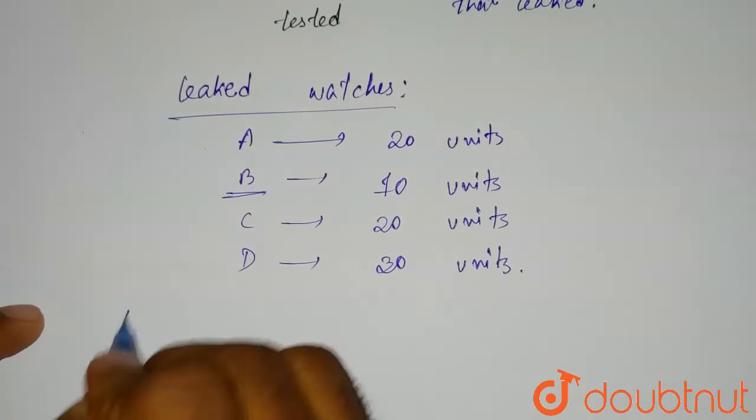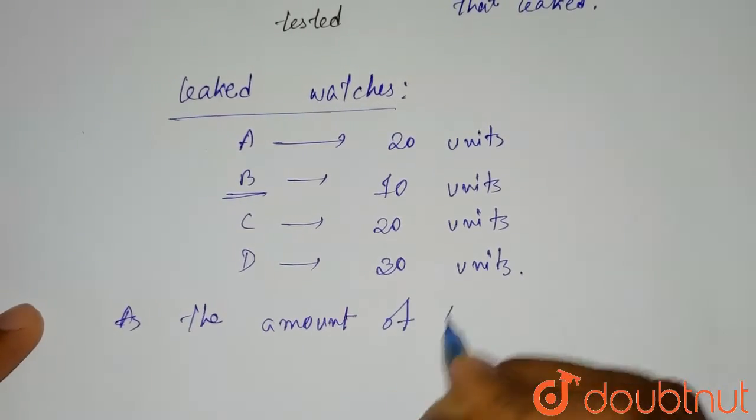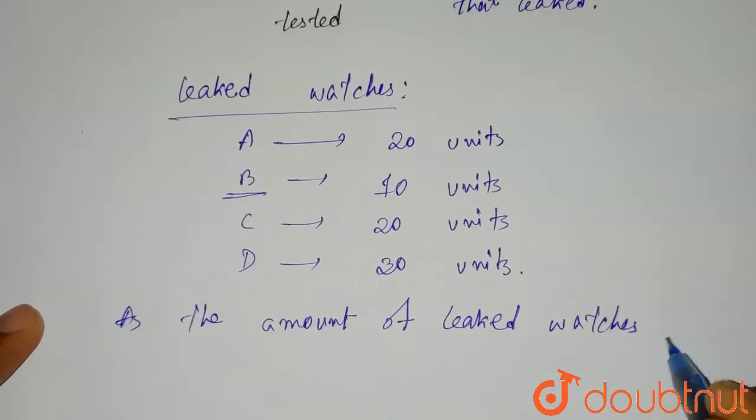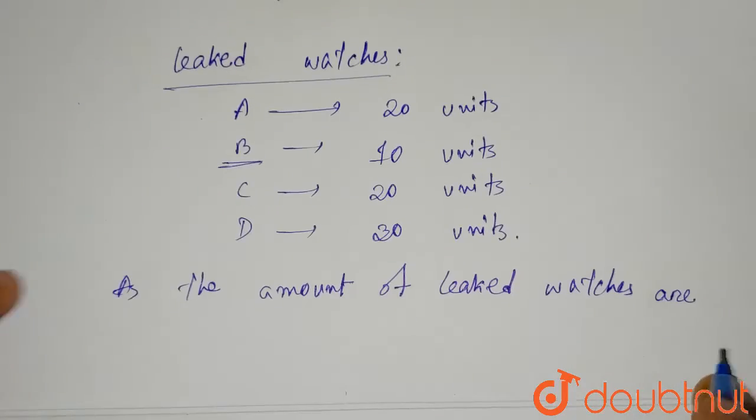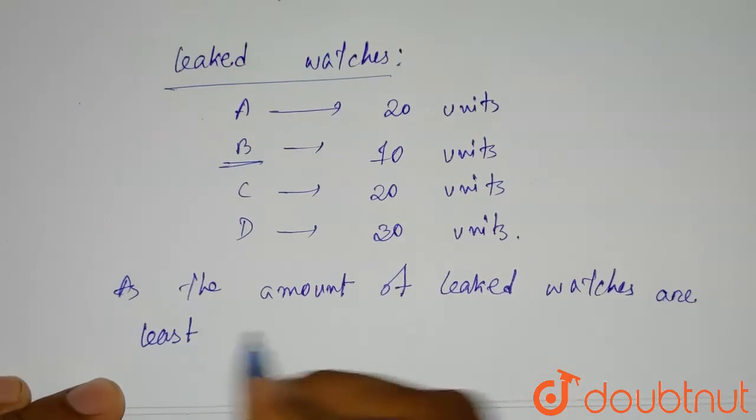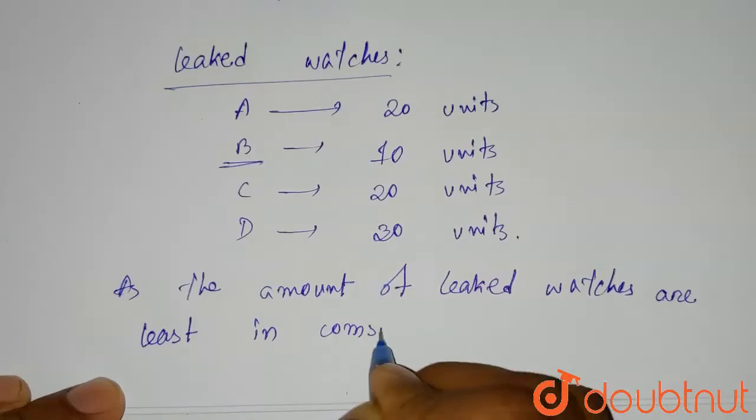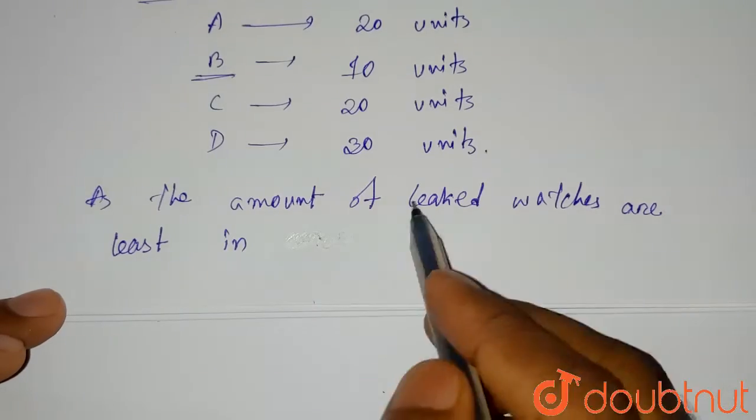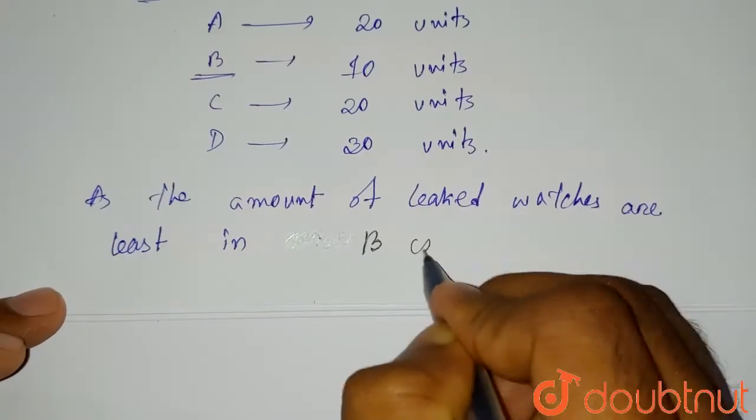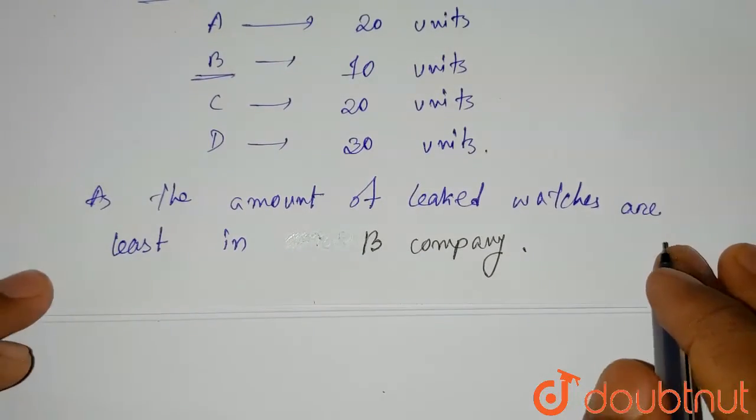So from here you can see, as the amount of leaked watches are least in B company, we can say that B company makes the best watches.